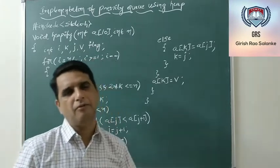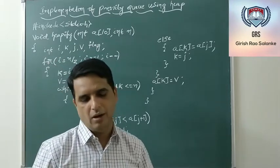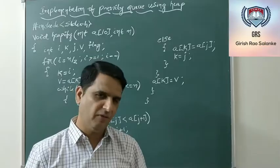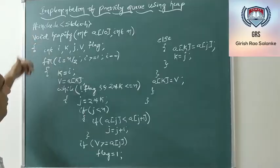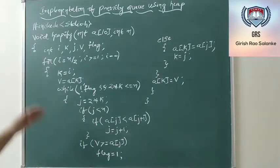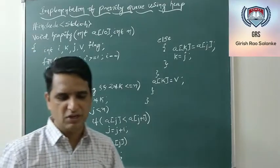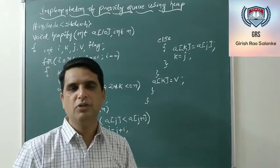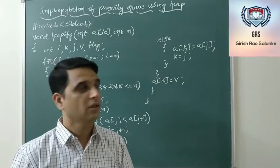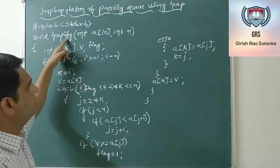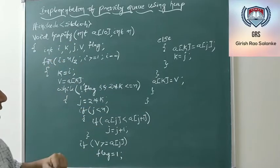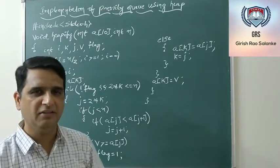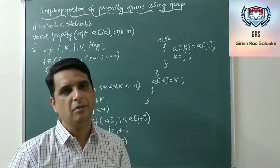In today's video, let us discuss the implementation of a priority queue using a heap in C. I have declared the header file, then I came up with a function named heapify. Heapify is the most generic name most authors use for the construction of a heap. This heapify function constructs a max heap — the root node should have the maximum element.